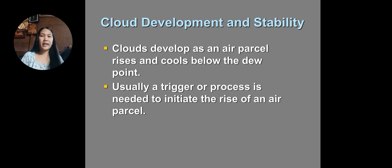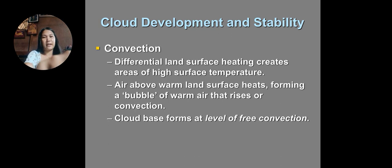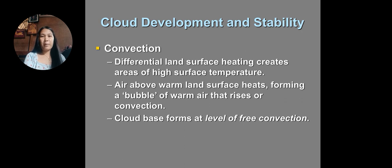A trigger or process is needed to initiate the rise of an air parcel. Through convection, differential land surface heating creates areas of high surface temperature. Air above a warm land surface heats, forming a bubble of air that rises — this is convection. The cloud base forms at the level of free convection.